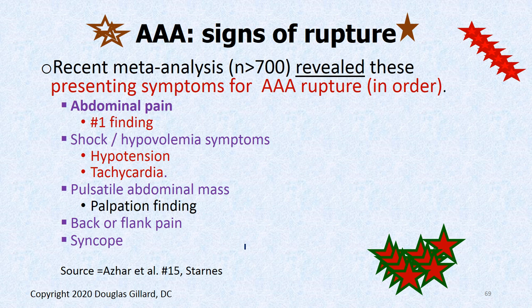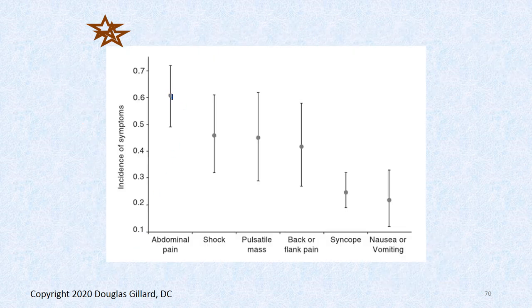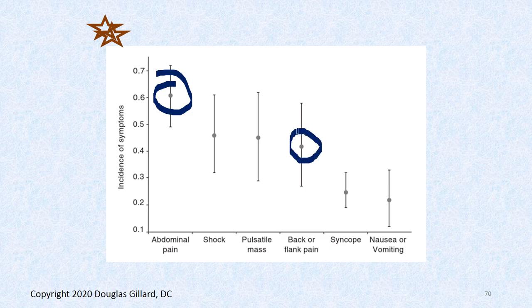What are the signs of a ruptured abdominal aortic aneurysm? A meta-analysis by Acer et al. studied 700 patients who presented with a bleeding abdominal aortic aneurysm. Number one finding was abdominal pain — by far the most common, statistically different than the rest. Number two was hypovolemic shock symptoms: low blood pressure and tachycardia. Number three, in most you could palpate the abdominal aorta and feel the aneurysm. Then back pain and syncope last.